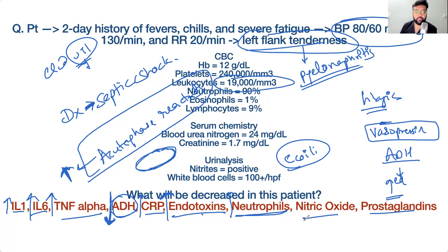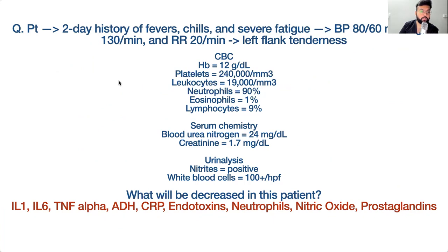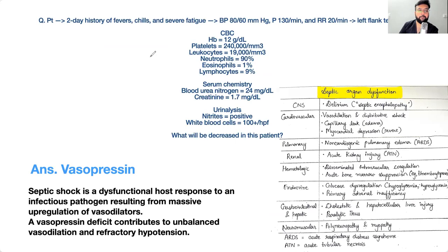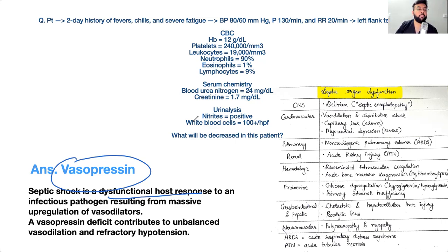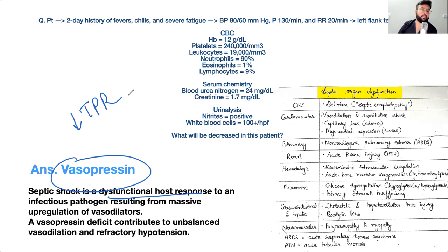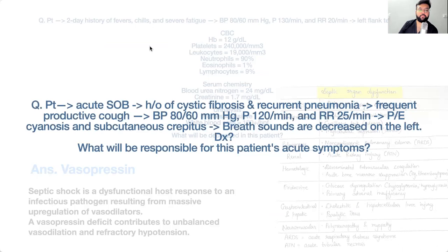Nitric oxide and prostaglandins will be high in septic shock, while ADH will be low. Vasopressin normally causes vasoconstriction via the V1 receptor; if that pathway is dysfunctional, you get vasodilation and hypotension. Septic shock is a distributive shock characterized by significant vasodilation, which means total peripheral resistance is decreased.